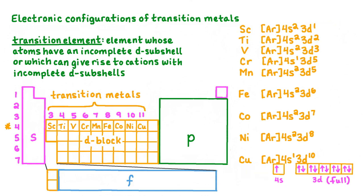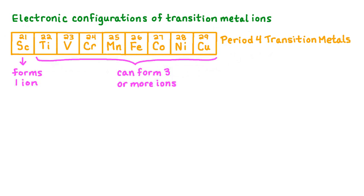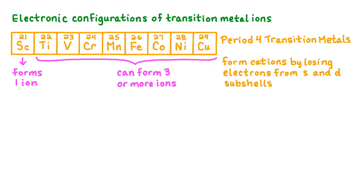When looking at the electron configurations of all of the transition elements in period 4, we see that with the exception of copper, all have an incomplete D subshell — this is a defining characteristic of the transition elements. Most transition metals can form more than one type of ion. In fact, all of the period 4 transition metals can form three or more different ions, except for scandium, which can only form one type of ion. Period 4 transition metals form cations, or positively charged ions, by losing valence electrons from their s and d subshells.